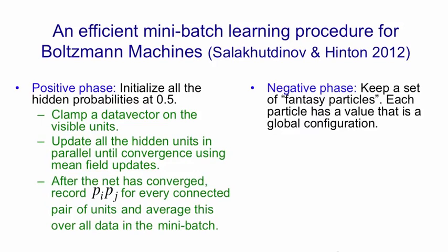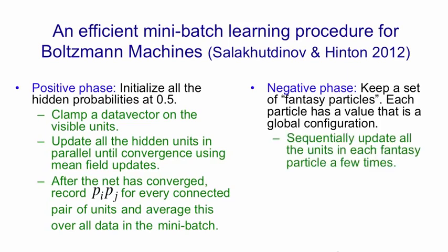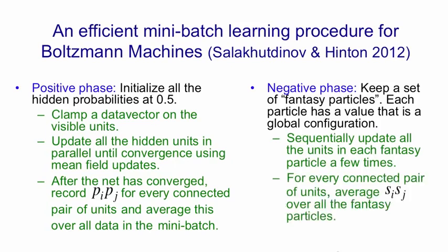In the negative phase, we do what we were doing before: we keep a set of fantasy particles, each of which has a value that's a global configuration. After each weight update, we sequentially update all the units in each fantasy particle a few times. Then for every connected pair of units we average SiSj — these stochastic binary things — over all fantasy particles. The difference in those averages is the learning rule: we change the weights by an amount proportional to that difference.